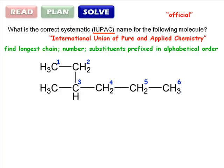The base name for a chain that is 6 carbons long is hex. And since the chain is completely saturated, in other words there are no double or triple bonds or other functional groups, the suffix for this molecule will be ane.